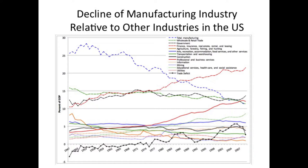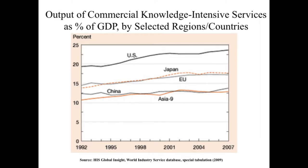However, there are two rising sectors shown by the red lines: finance, insurance, real estate and rental, and professional and business services. Another graph shows output of high-tech manufacturing industries for industrialized countries. The black line — the United States — shows that output of high-tech manufacturing industries has increased over time. Other developed countries like the European Union show similar trends. Output of commercial knowledge-intensive services as a share of GDP has also increased over time — the United States is at almost 20% of GDP.